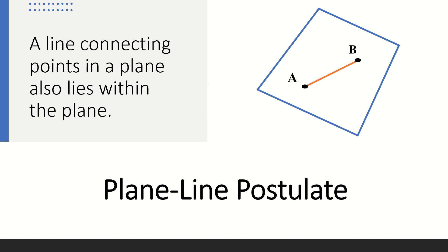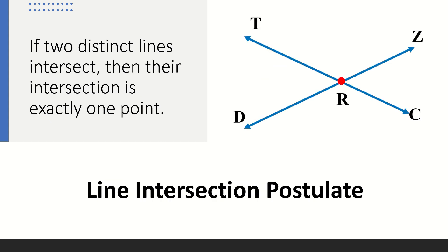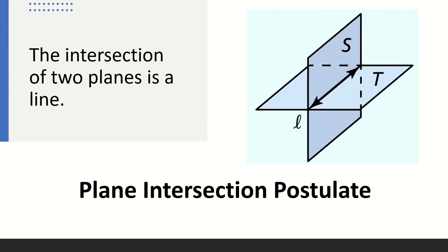The plane line postulate states that a line connecting points in a plane also lies within the plane. Next, the line intersection postulate states that if two distinct lines intersect, then their intersection is exactly one point. For our illustration, the point of intersection of line DZ and line TC is point R. And lastly, the plane intersection postulate states that the intersection of two planes is a line. For our illustration, the intersection of plane S and plane T is line L.